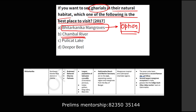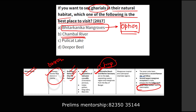You need to prepare Bhitarkanika mangroves thoroughly. It is situated on the eastern coast of India in Odisha's Kendrapara district. Three rivers flow into Bhitarkanika: Brahmani, Baitarani, Dharma, and Patasala. Bhitarkanika has the largest population of the endangered saltwater crocodile. There is also a Gahirmatha beach nearby, famous for Oliver Ridley turtle nesting — a very famous UPSC question. Bhitarkanika is the second Ramsar site of Odisha and the second largest mangroves after Sundarbans in India.